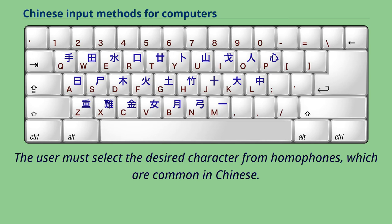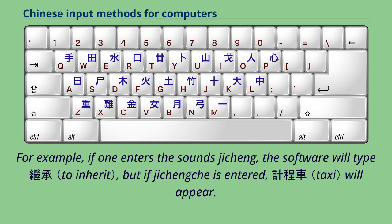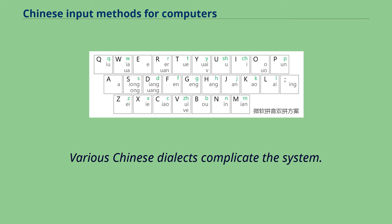Modern systems, such as Sogou Pinyin and Google Pinyin, predict the desired characters based on context and user preferences. For example, if one enters the sounds 'Jicheng,' the software will type one character, but if a different tone of 'Jicheng' is entered, a different character will appear. Various Chinese dialects complicate the system.